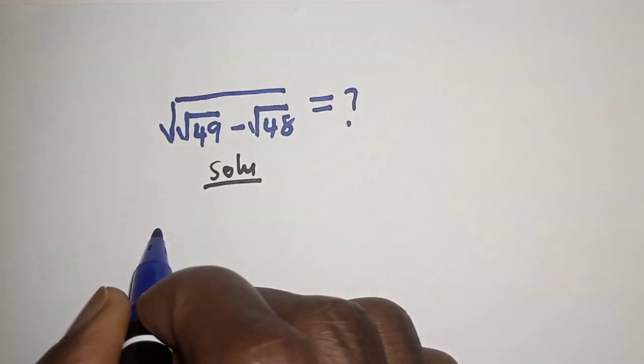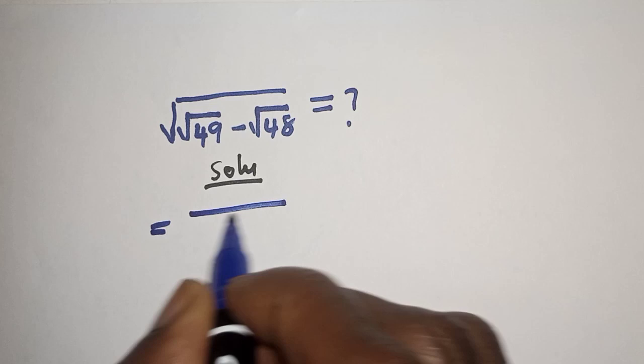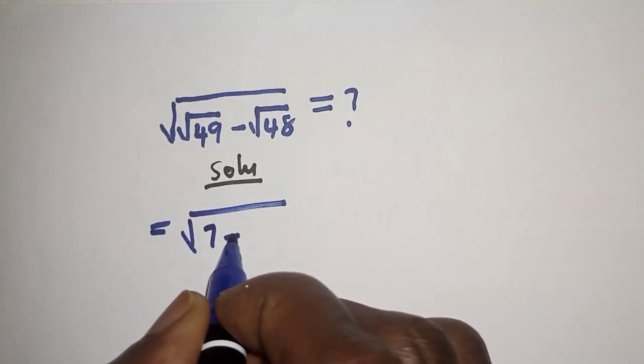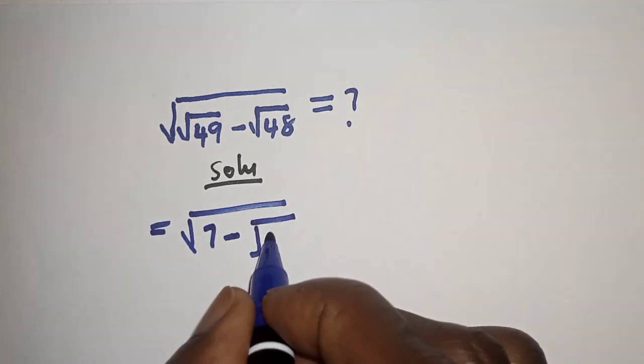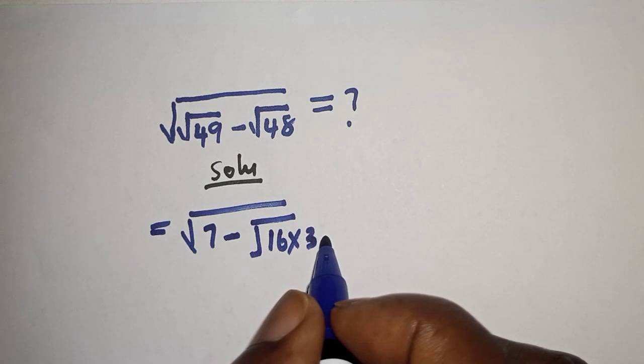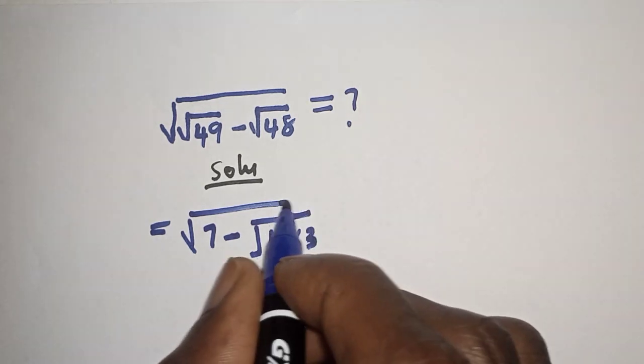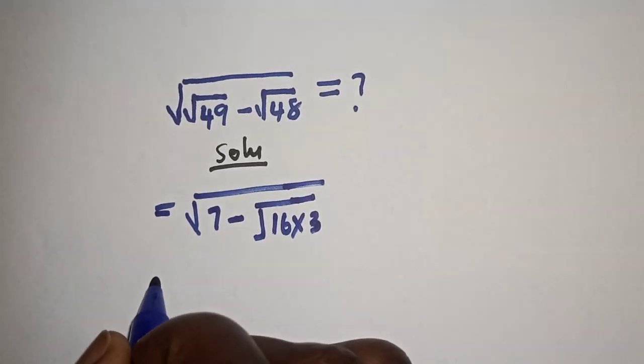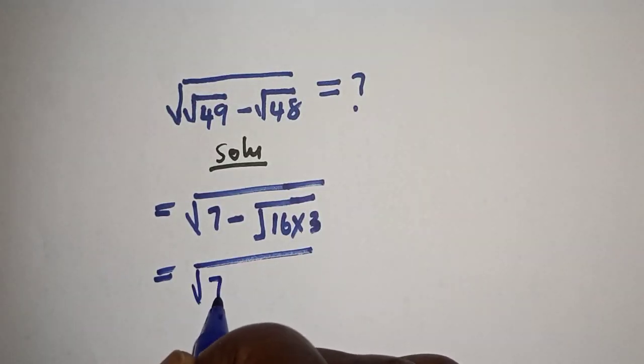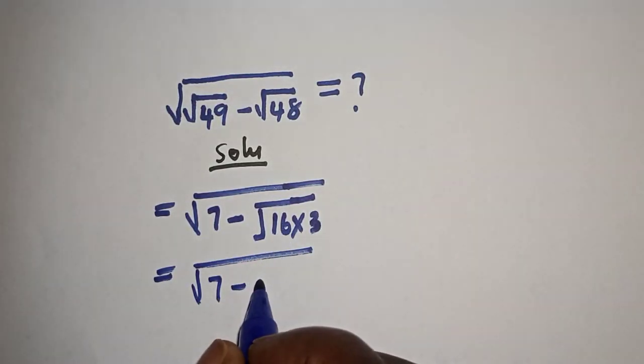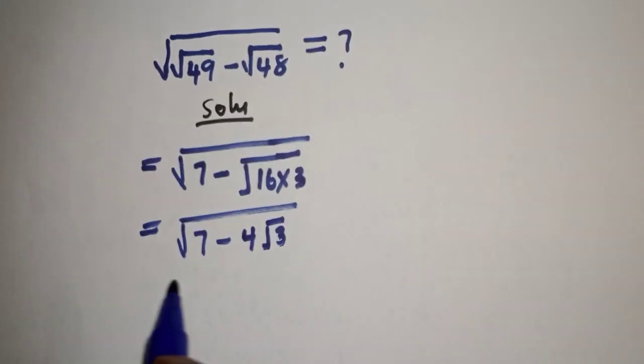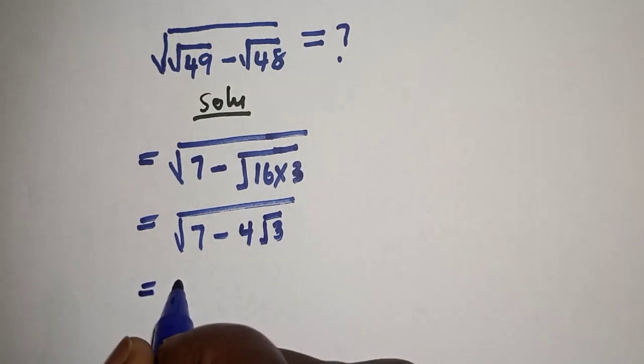This is equal to square root of, square root of 49 is 7, minus square root of 48 is 16 multiplied by 3. This is equal to square root of 7 minus, square root of 16 is 4, then root 3. So this is equal to